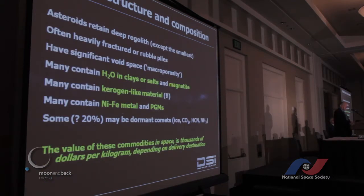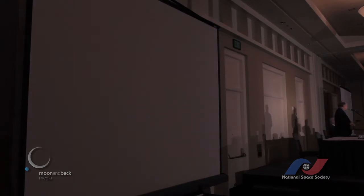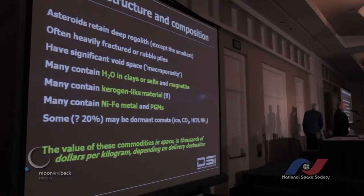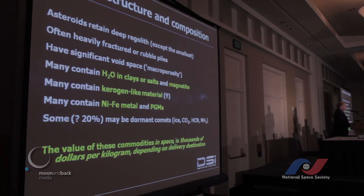Asteroid structure and composition - the pictures we have so far show that asteroids retain regolith. It's hard to think back even to 951 Gaspra in 1991/1993, whenever the Galileo probe flew past it - how surprised the astronomers were to see regolith on such a small body. Even Itokawa, which is only 500 metres long, shows regolith: gravel-sized regolith in the lowlands, large boulders in the higher areas.